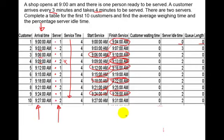Looking at customer waiting time — that's arrival time minus start-of-service time — you'll see it's 0 every single time. Because as soon as they arrive, they get served. Look at customer number 9: they arrive at 9:24 and get served at 9:24. Server idle time is the time a server sits around doing nothing.